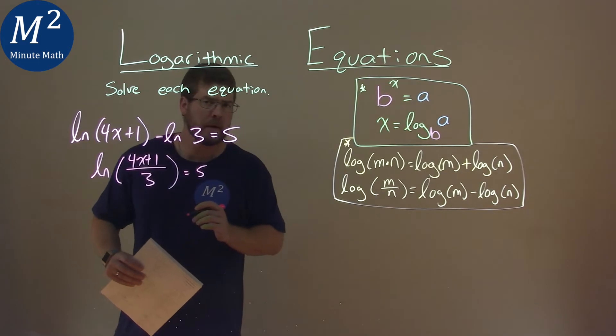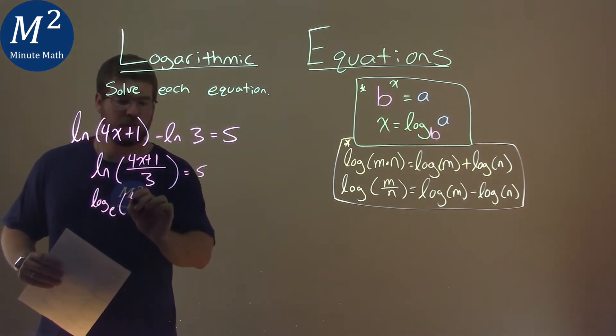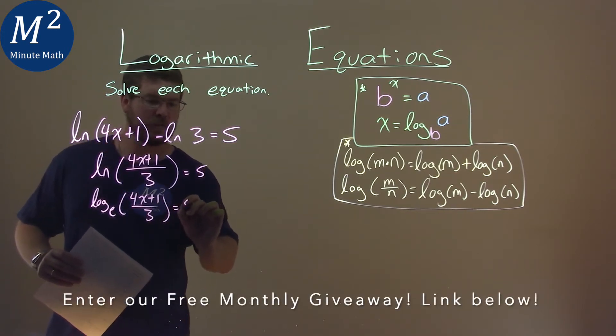Now, remember when I said natural log is log base e. So log base e of 4x plus 1 over 3, and that's equal to 5.